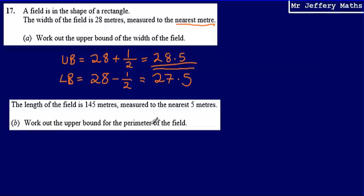For part B, I'm asked to work out the upper bound for the perimeter of the field, given that the length of the field is 145, measured to the nearest 5 metres.